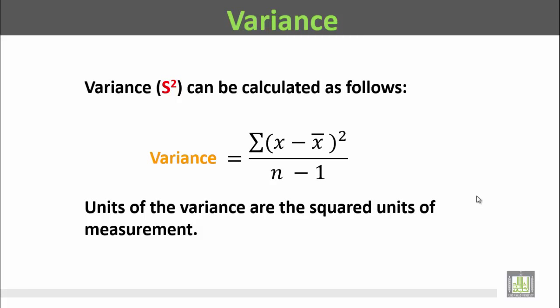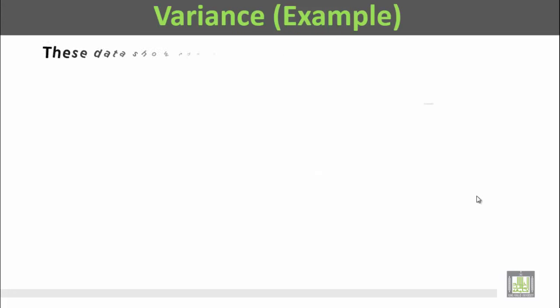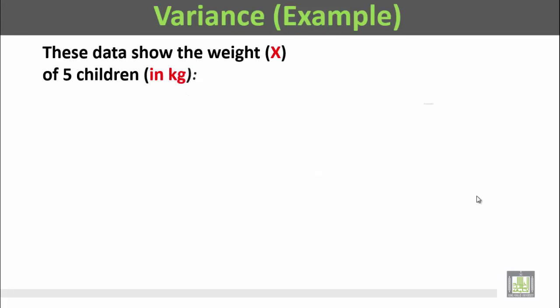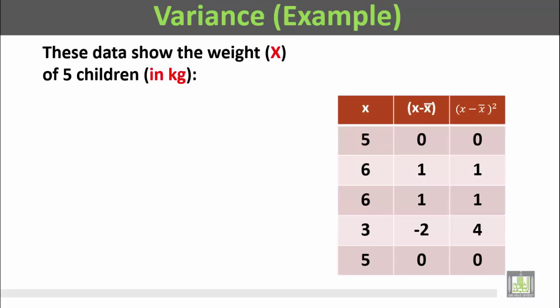وحدات التباين هي مربع وحدات القياس. فإذا كان القياس بالسنتيمتر فإن التباين سيكون سنتيمتر مربع. إن كان بالجرام فوحدة التباين ستكون جرام مربع وهكذا. For example, the data show the weight x of five children.